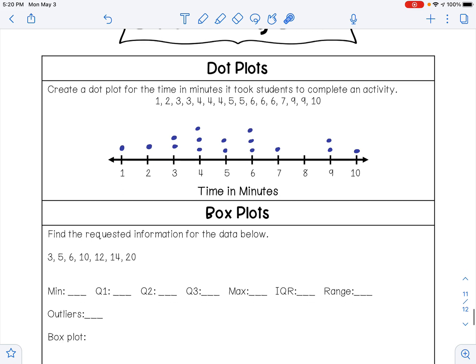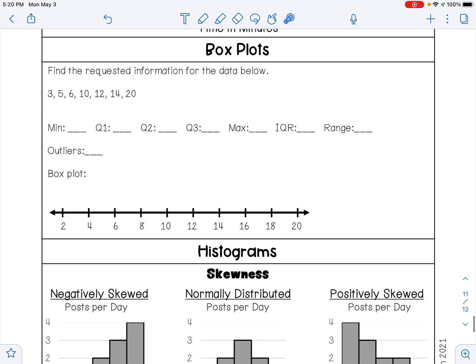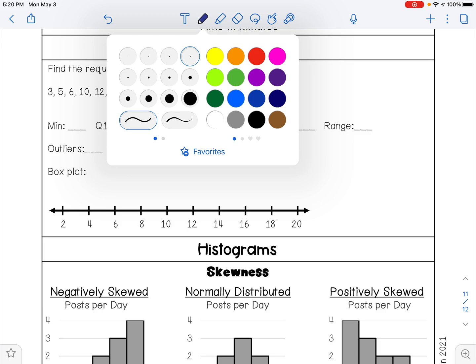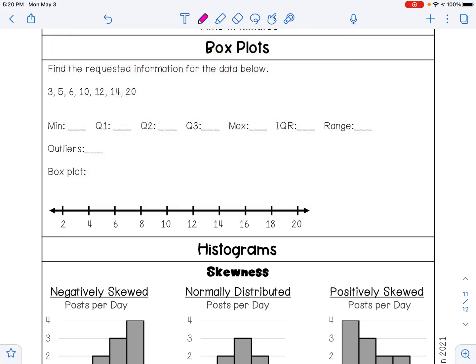For dot plots, you always want to make sure your data is given to you in order. If your data is in order like it is for us here, we can go ahead and identify the different statistics.